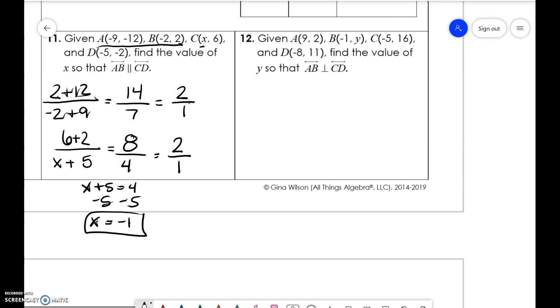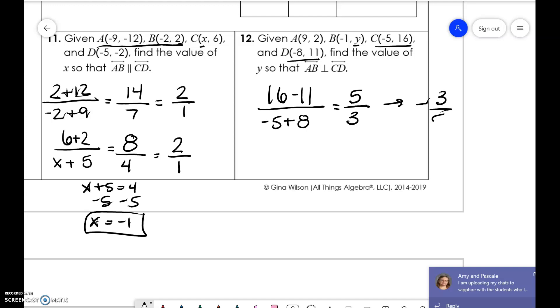Over here, we want to find y so that AB is perpendicular to CD. We don't know all the values of AB, but we do know all the values of CD. So 16 minus 11 over negative 5 plus 8. So 16 minus 11 is 5, and negative 5 plus 8 is positive 3. So perpendicular means we want the slope to be negative 3 over 5.